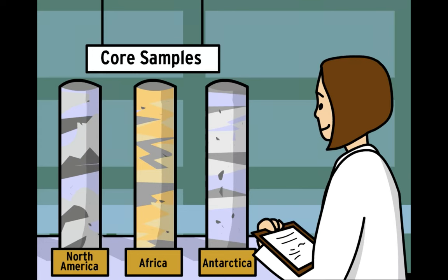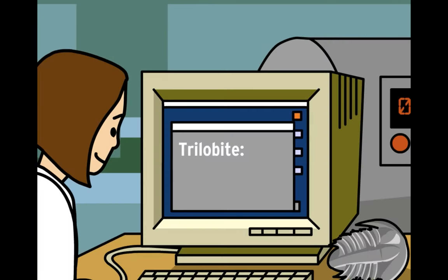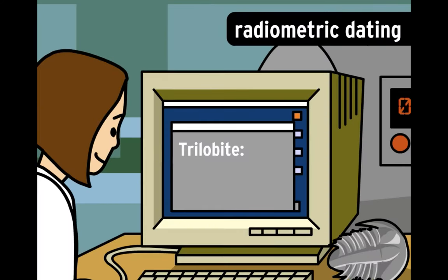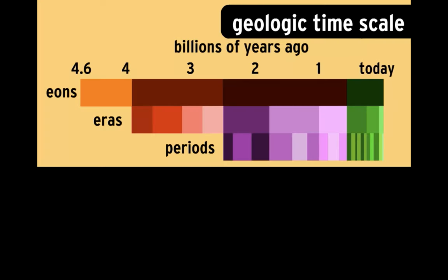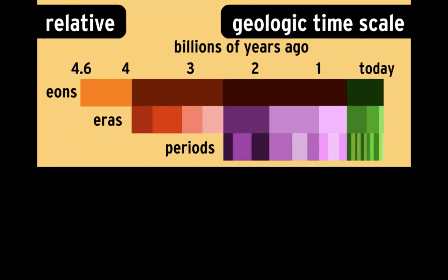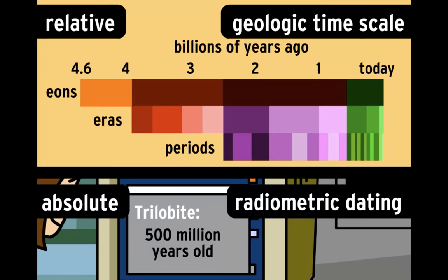To get a more complete picture of the conditions on our planet, scientists compare the strata from one area of the Earth to another. They also employ radiometric dating, which uses radioactive isotopes to date objects. As opposed to the geologic timeline's relative dates, radiometric dating gives an absolute date.